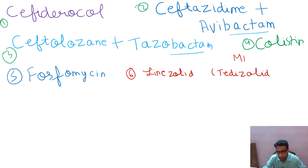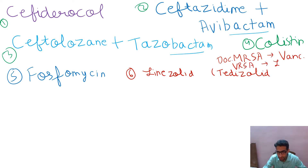The drug of choice for MRSA — methicillin-resistant Staphylococcus aureus — is vancomycin. Drug of choice for methicillin-resistant bacteria is vancomycin. And the drug of choice for VRSA — vancomycin-resistant Staphylococcus aureus — is linezolid. Just a revision for USMLE and PLAB exams. Then tedizolid phosphate.